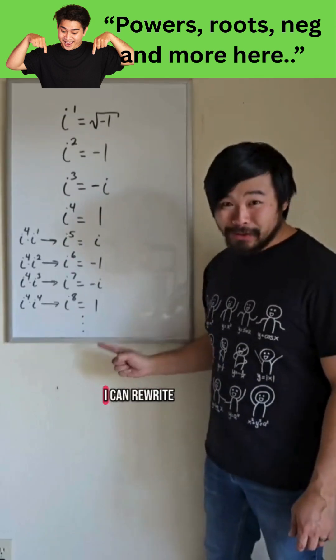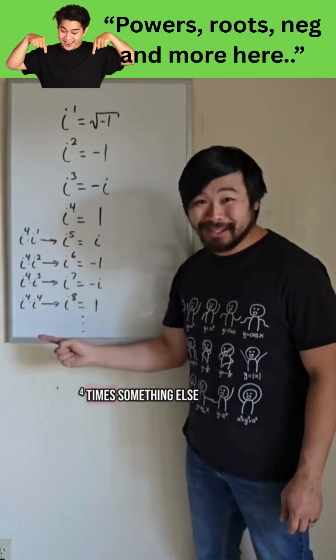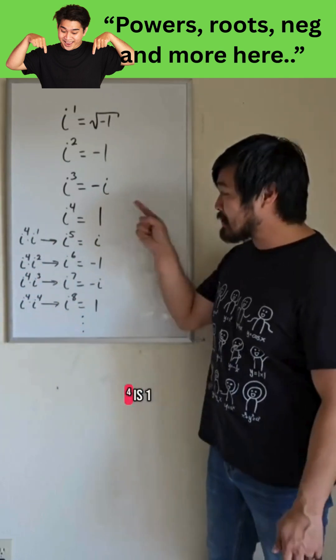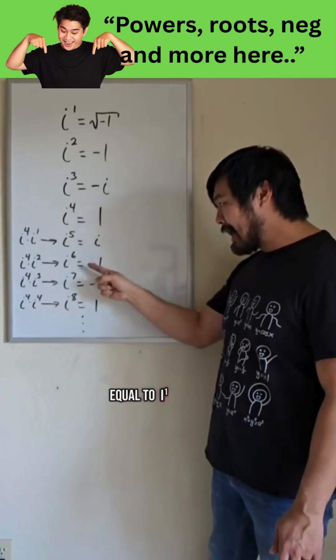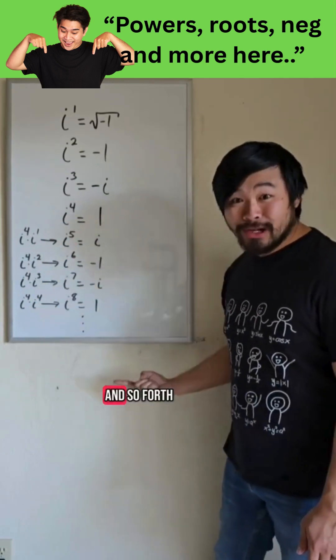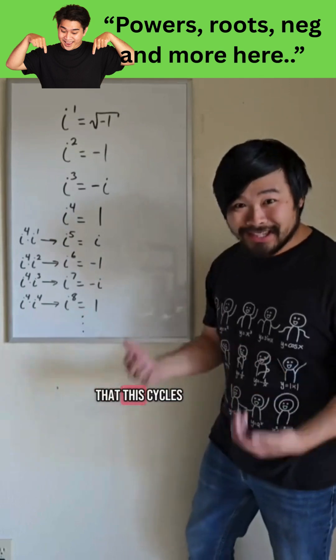And with the next 4, I can rewrite these as i to the 4th times something else. And since i to the 4th is 1, I notice that i to the 5th is equal to i to the 1st, i to the 6th is equal to i squared, and so forth. So I notice that this cycles.